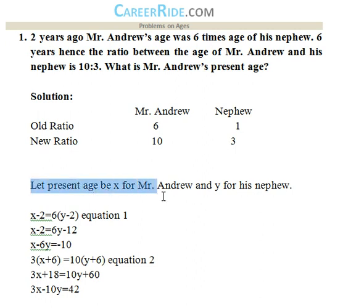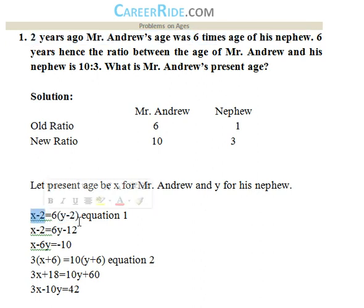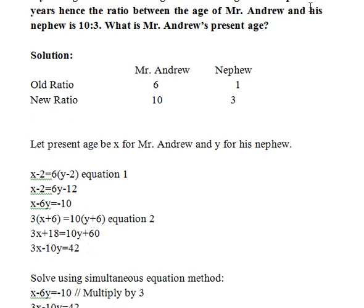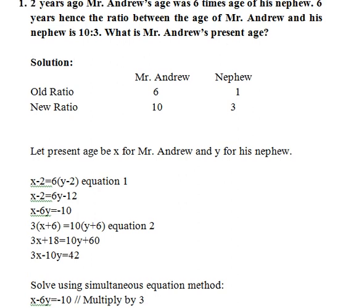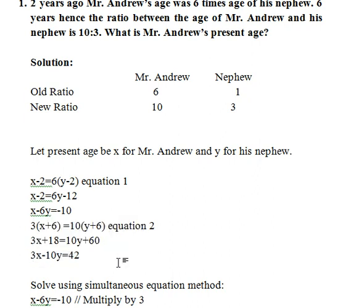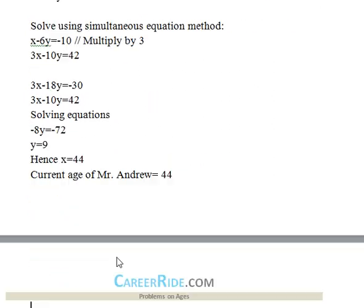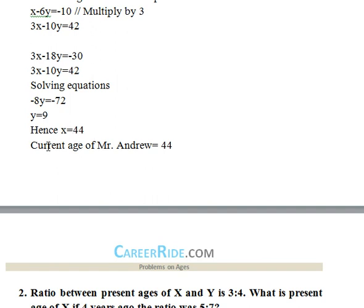Let present age X be for Mr. Andrew and Y for his nephew. Two years ago means X minus 2 for Mr. Andrew and Y minus 2 for his nephew. Mr. Andrew's age was six times his nephew's, so X minus 2 equals 6 times Y minus 2, which simplifies to X minus 6Y equals negative 10. The second equation: six years hence, X plus 6 to Y plus 6 equals 10 to 3, giving 3 times X plus 6 equals 10 times Y plus 6, simplifying to 3X minus 10Y equals 42. Solving these two simultaneous equations gives Y equals 9 and X equals 44. Mr. Andrew's current age is 44.